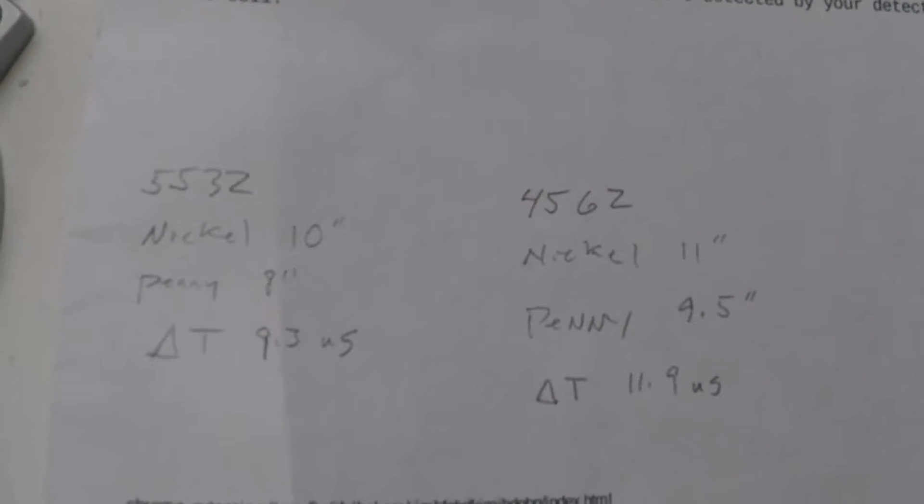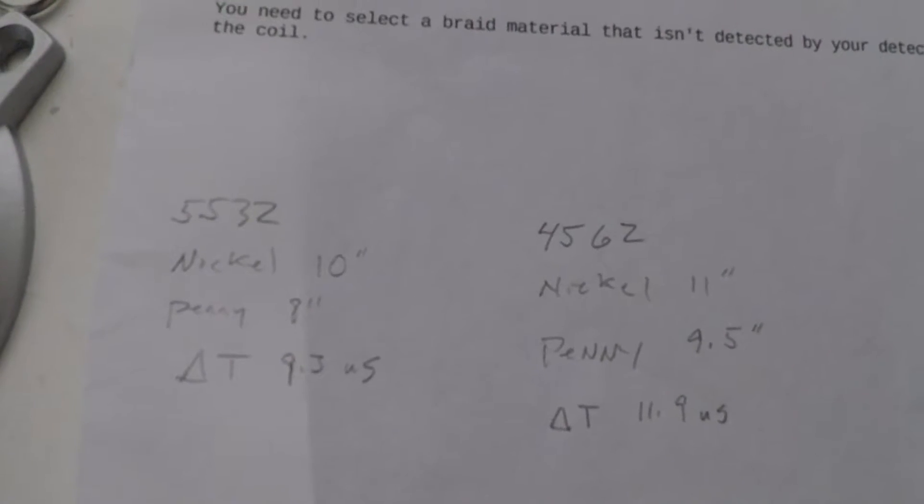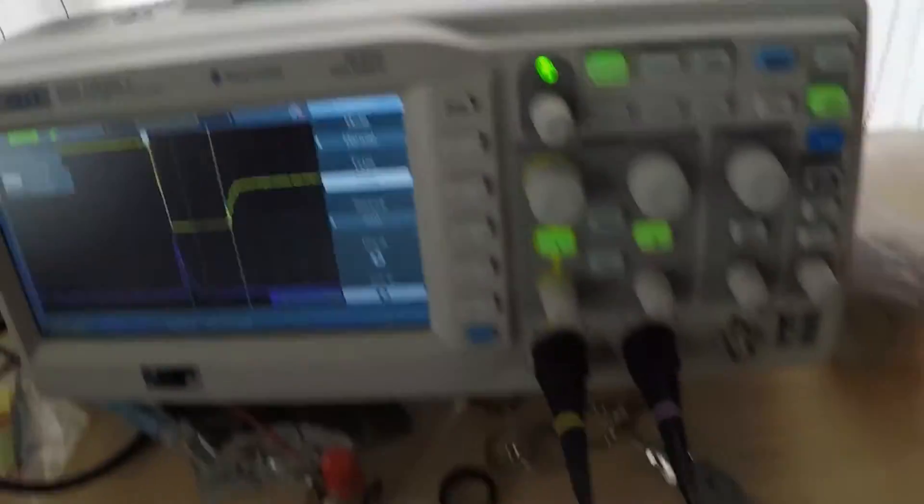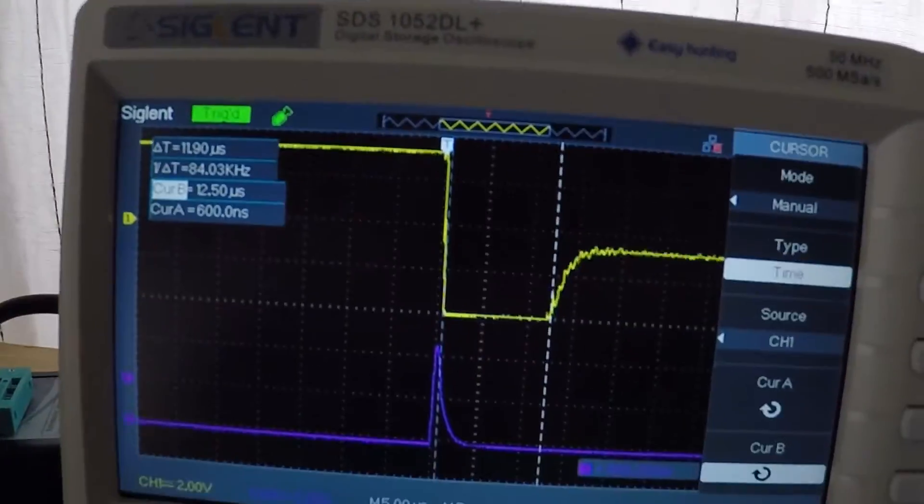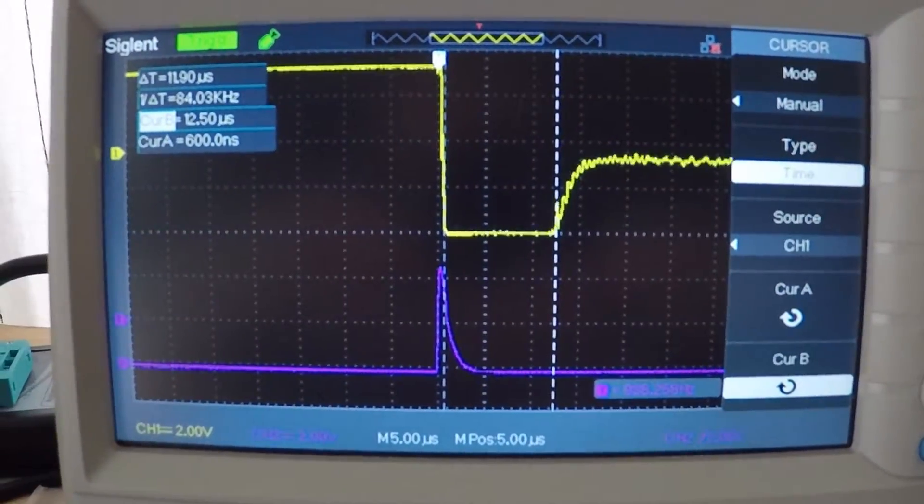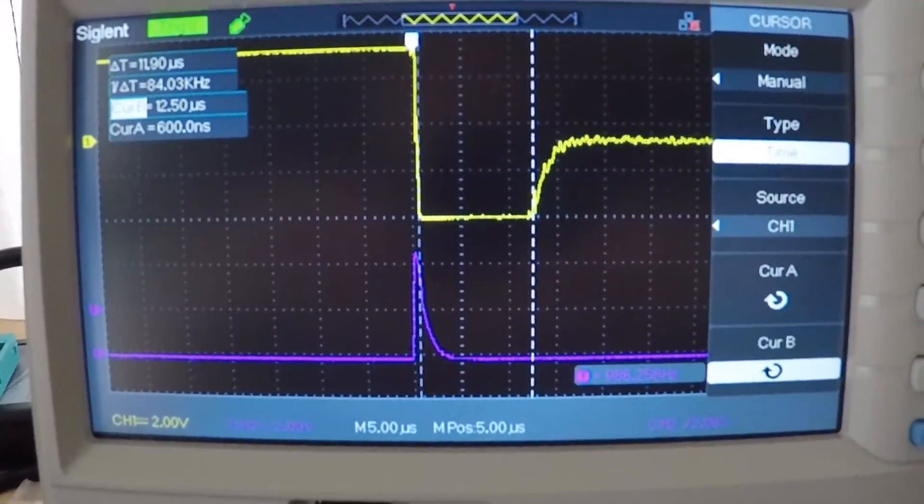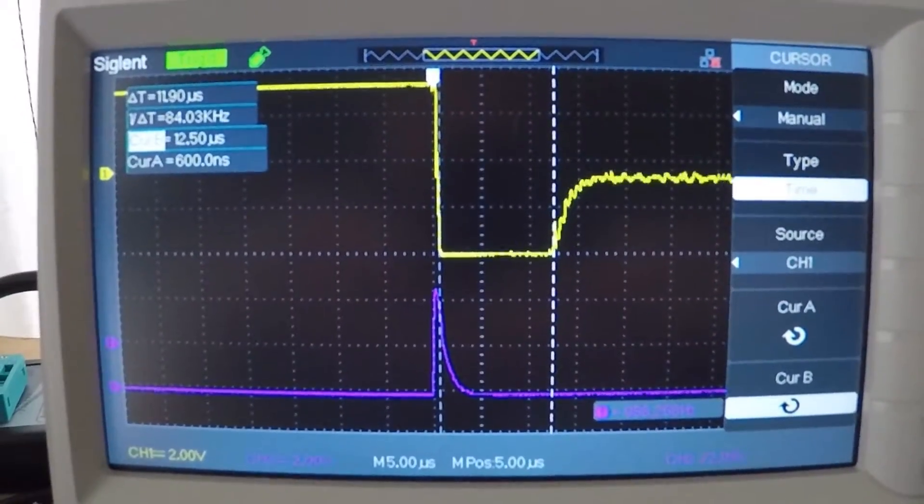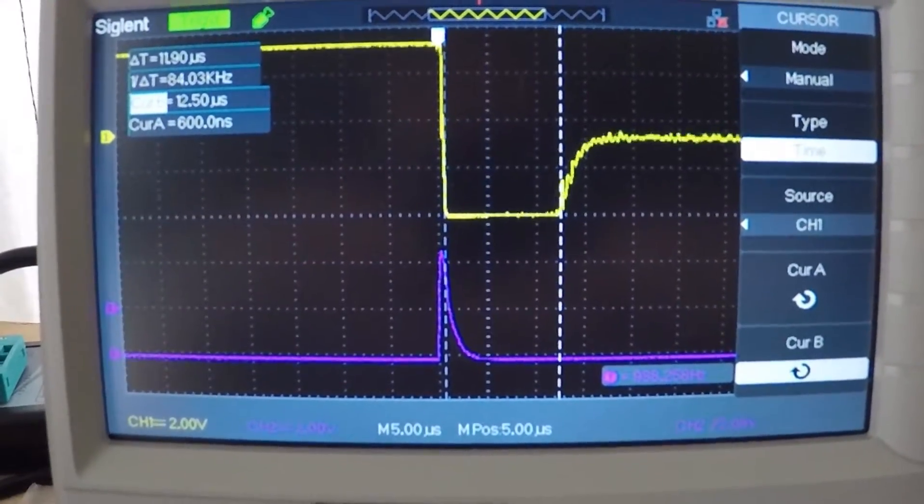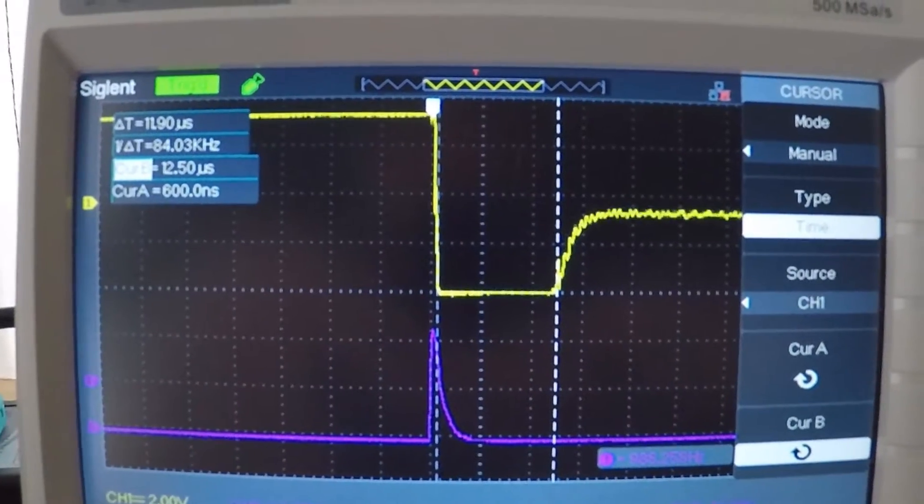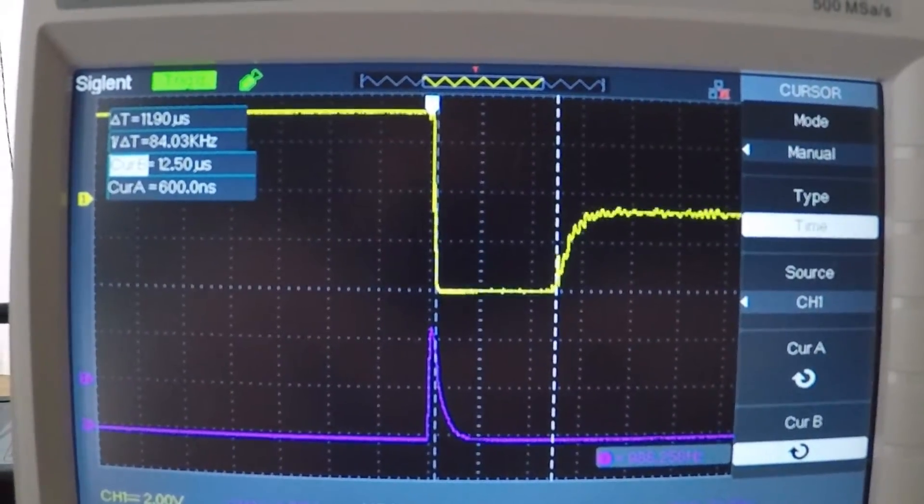So a little bit of an increase. You do see the waveform on the 4562 as it comes out of saturation looks like there's a lot of interference on it, that's noise. The 5532 was a lot smoother.